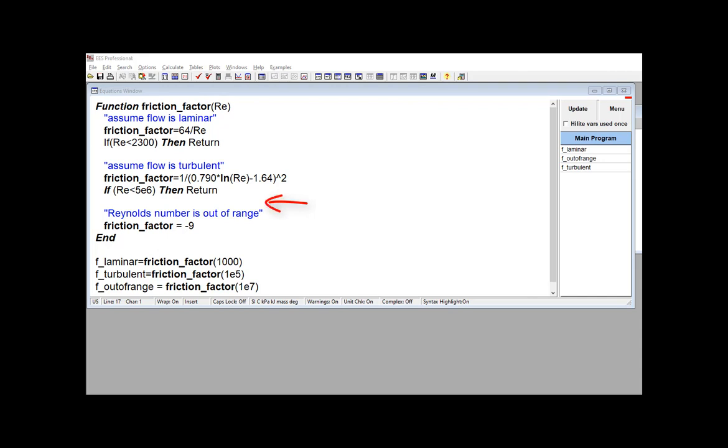And then finally, if I get beyond this statement, I know my Reynolds number is above 5 times 10 to the 6th, so I'm out of range of my correlation. And I can do something like maybe return a minus 9 to indicate that the correlation isn't valid.